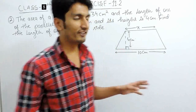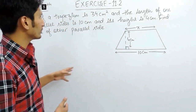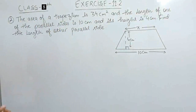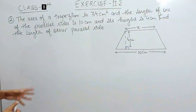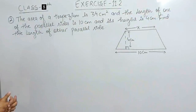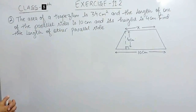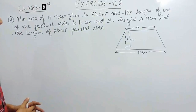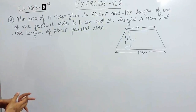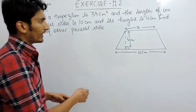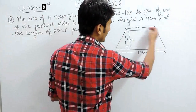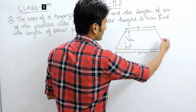Hello everyone. In this video we are going to solve question number 2 of exercise 11.2. The question says the area of a trapezium is 34 cm square, the length of one parallel side is 10 cm, and its height is 4 cm. You have to find the length of the other parallel side.